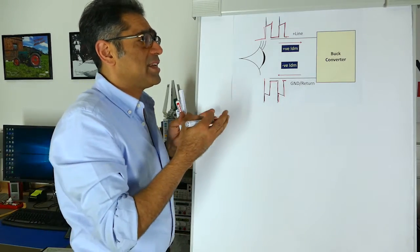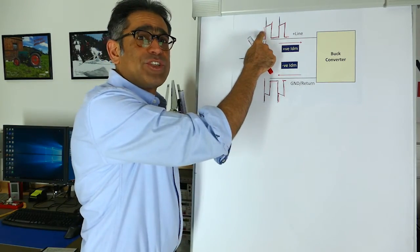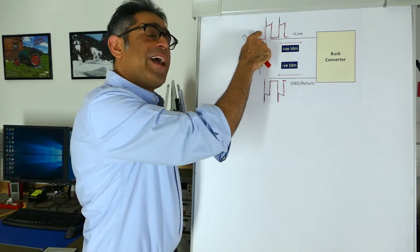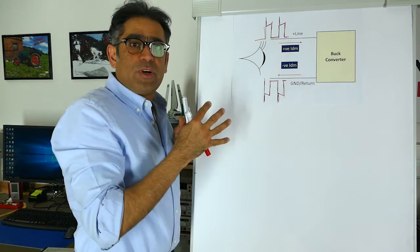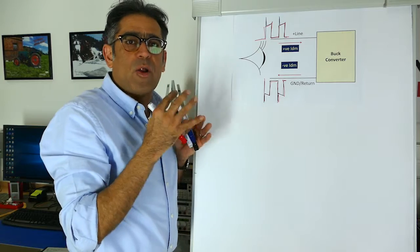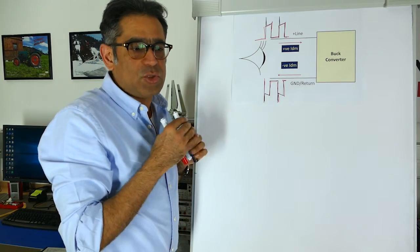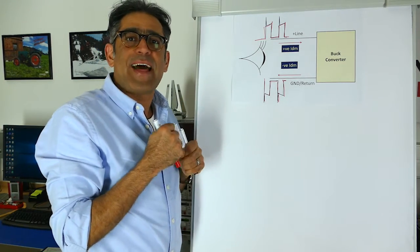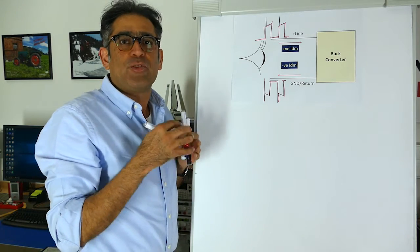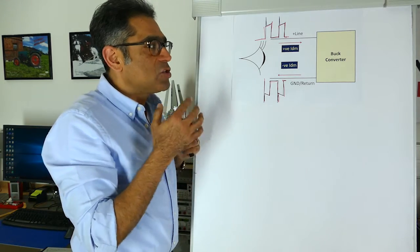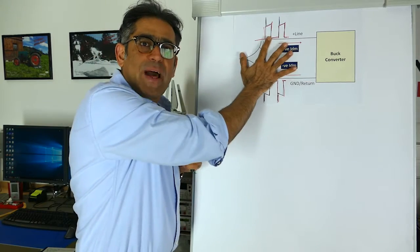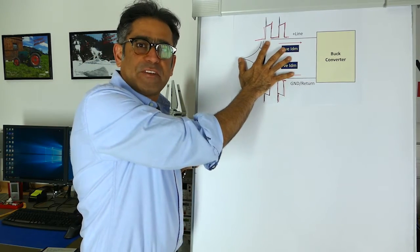The problem with power supplies in particular is that these edges are extremely sharp, and when you have very sharp edges you have got very high harmonic content. This could cause an enormous amount of problems, and that's why various regulations—in particular, the European Union's EMC directive—stop us from having such amount of harmonics, and we'll have to filter that.